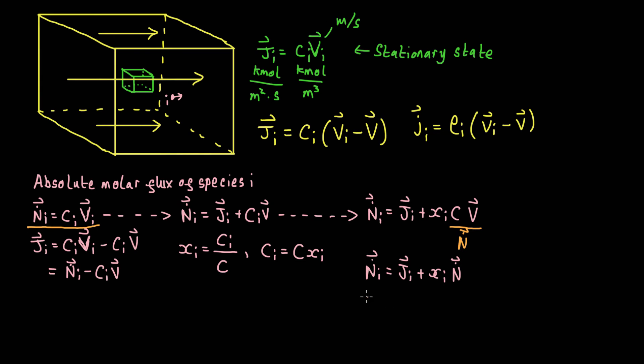This is quite a nice result. What it tells us is that if we want to know the flux of species I in the system, we can calculate it from two contributions: one partial contribution from diffusion due to the concentration gradient, and an additional contribution from any advective flow of the system as a whole. We can calculate this if we know how much of species I is in the system and what the flux of the system as a whole is — quantities which tend to be relatively easy to measure.